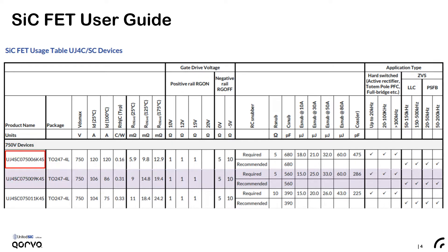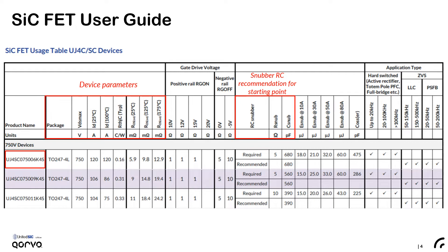The first column gives the device part number. This group of columns gives device parameters. The gate drive voltage group gives gate resistor recommendations for different gate drive voltage levels. This group of columns gives snubber recommendations as a starting point, and right next to it is the snubber resistor loss at different current levels. The application types will have an impact on our snubber recommendations — as required, recommended, optional, or no need.